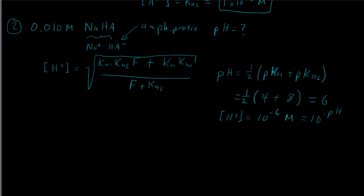Very little of the HA- species dissociates in solution, which is why we get very little H+. In fact, that H+ is not so different from what we'd have from pure water. The HA- concentration is approximately equal to what we started with — about 0.01 molar.